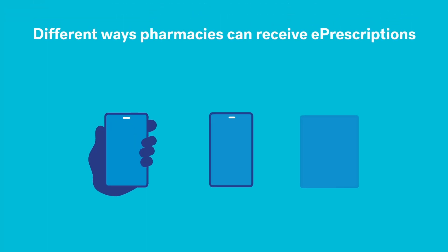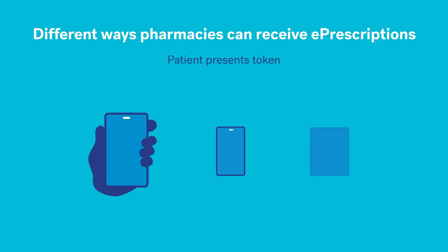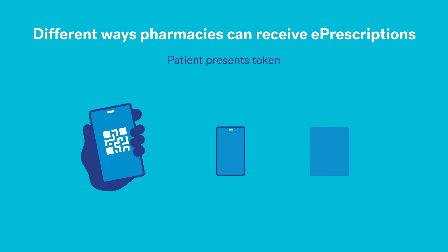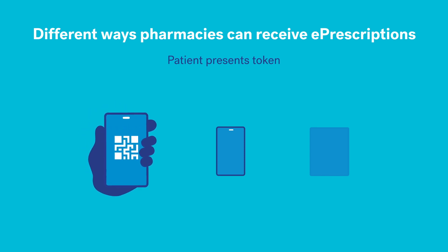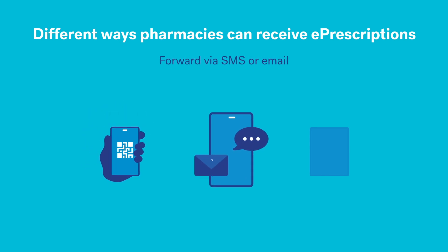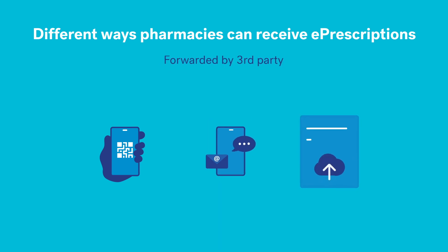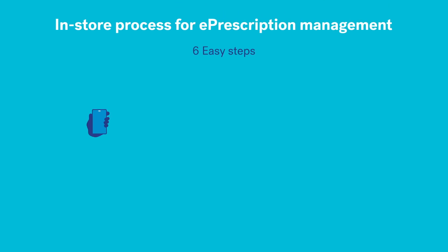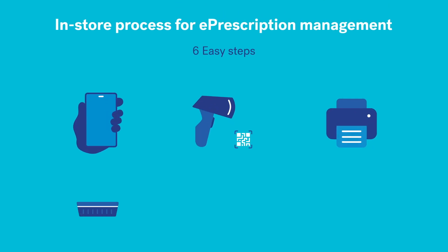There are a number of ways electronic prescriptions can be received by your pharmacy. A patient may present their phone with their electronic prescription, otherwise known as a token. You may receive a copy of the token via SMS or email, or it might be requested by a third party. There are six easy steps in managing the in-store process for e-prescriptions.